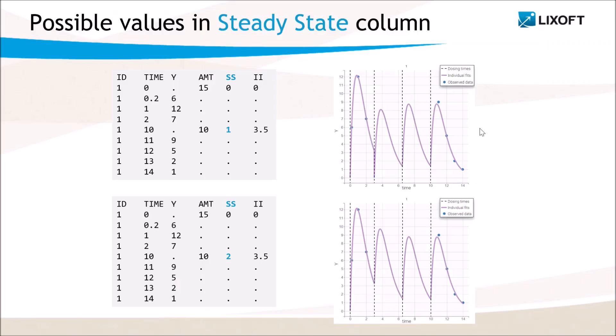This plot is recalled on the top of this slide, along with the dataset. Now, if I replace the tag 1 by 2 in the column steady state, as on the bottom, the same 2 additional doses are added, but without washout.